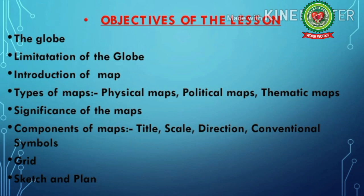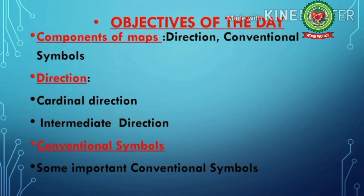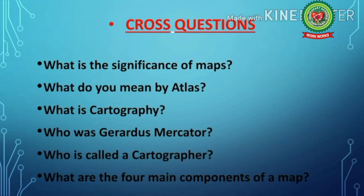Today we will discuss the next two components of maps, which are direction and conventional symbols. In direction, we will discuss cardinal direction and intermediate direction. Then conventional symbols, in which we will discuss some important conventional symbols. But before we start with this topic, here we have some cross questions related with the last video.